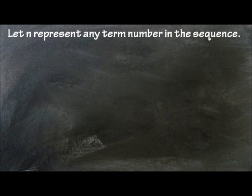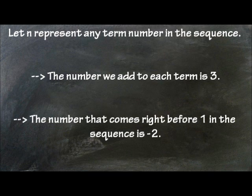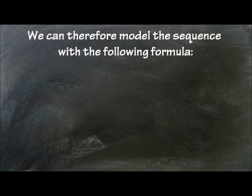Let n represent any term number in the sequence. The number we add to each term is 3. The number that comes right before 1 in the sequence is negative 2. We can therefore model the sequence with the following formula: 3 times n plus negative 2.